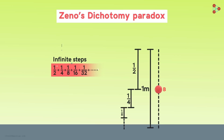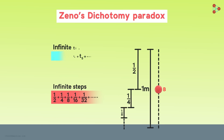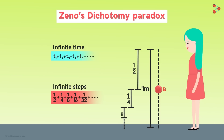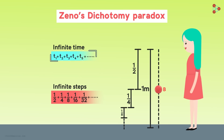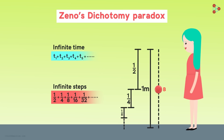Now, to perform each step, the ball takes some time. Since the number of steps the ball has to cover never ends — that is, there are infinite number of steps — Nora thinks the ball should never reach the floor. But we know that as we drop the ball, it reaches the floor in a few seconds. So where is the mistake in Nora's logic?